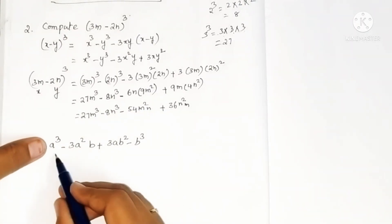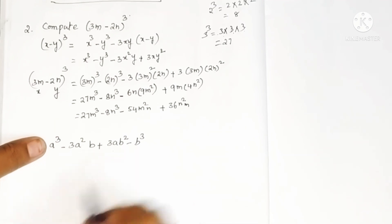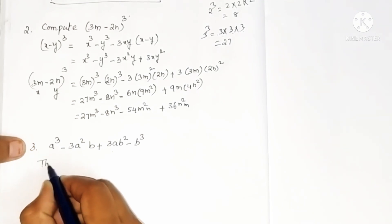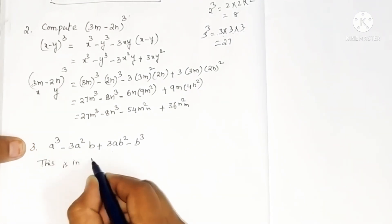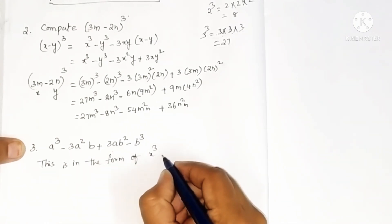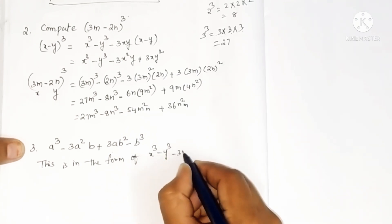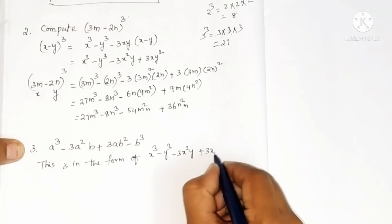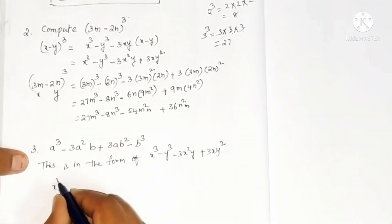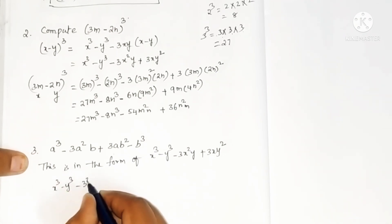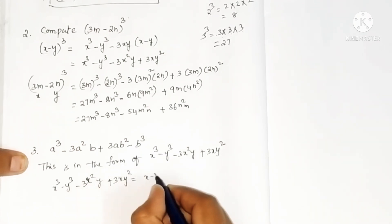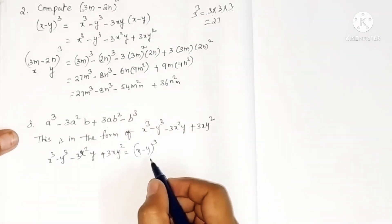Third problem: a cube minus 3 a squared b plus 3 a b squared minus b cube. Just see — this is in the form of x cube minus y cube minus 3 x squared y plus 3 x y squared, which is the expansion of x minus y whole cube. So this expression matches the formula for x minus y whole cube.